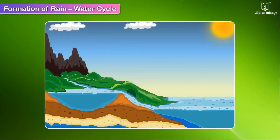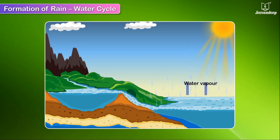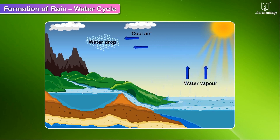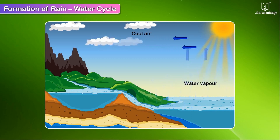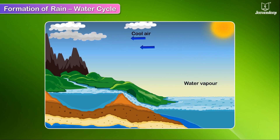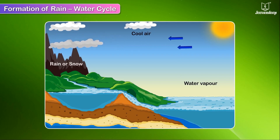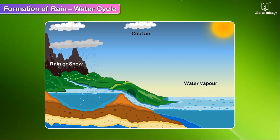Water cycle. Water in the oceans, seas, rivers, and lakes gets heated by the Sun and evaporates, forming water vapor. This water vapor rises up. When it comes in contact with the cool air high up or a mountain, it condenses to form tiny drops of water. These tiny drops join together to form clouds. As more drops join together, the clouds become heavy and come down in the form of rain or snow. The rainwater flows down into rivers, lakes, seas, and oceans.